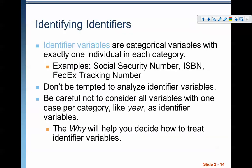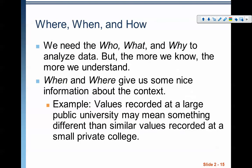So there's our who, what, why. Let's move on and actually talk about the where, when, and how. You need the who, what, and why to analyze the data, but the more we know, the more we understand. The when and the where give us nice information about the context. For this example, values recorded at a large public university may mean something different than similar values recorded at a small private college. If we're talking about measuring GPA and we're trying to figure out something nationwide, if we go to just a large public university and measure that one, there might be significant differences between that and a small private university.